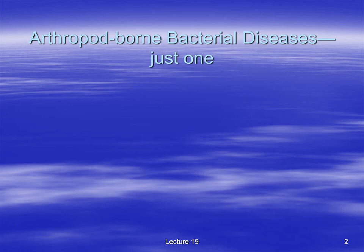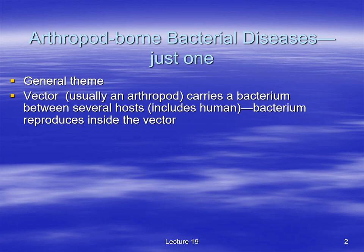Welcome to part two of lecture 19. We're going to talk about one arthropod-borne bacterial disease — a disease spread by some kind of bug. The general theme is: you have a biological vector, an arthropod bug, that carries a bacterium basically between several hosts. Humans are considered a host; another host might be a horse, bird, or squirrel. The bacterium is carried by the arthropod, reproduces inside it, making it a biological vector.